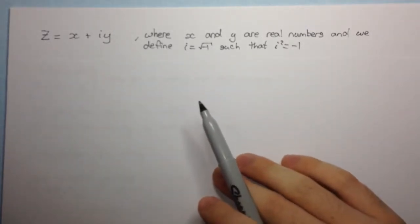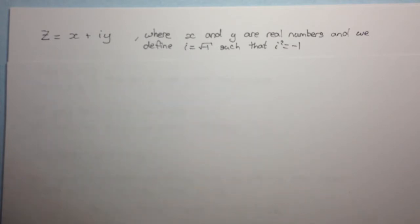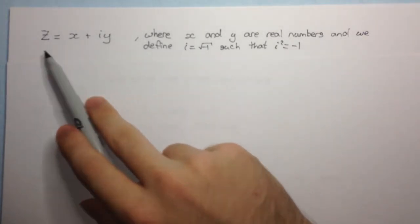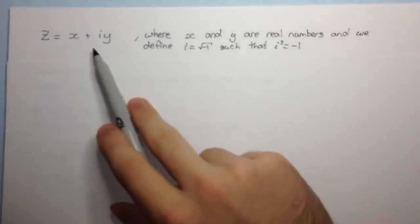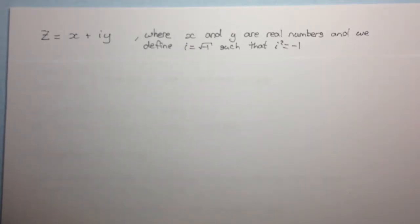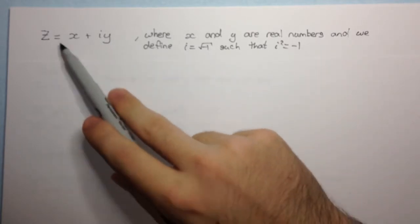So you might be wondering — this is a complex number, we're thinking of this as a number. This is a two-dimensional number here. So it seems a bit strange or a bit odd to think of it as a single number, but as you start to work with it a little bit more, you will start to familiarize yourself with this notion of a number being two-dimensional.